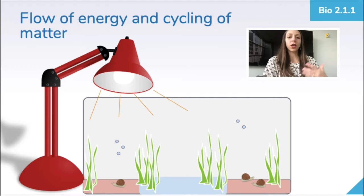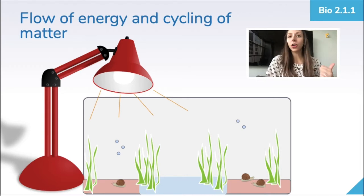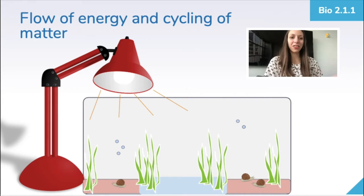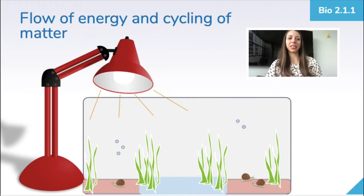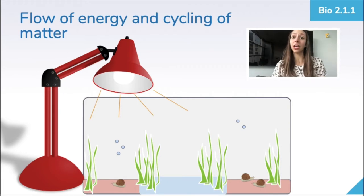Today we're going to look at the flow of energy and cycling of matter such as water, carbon, nitrogen, and oxygen through ecosystems, and that's an important part of this section. Each of these cycles is important to maintaining the health and sustainability of an ecosystem.